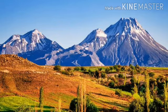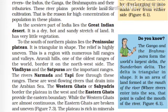In the western part of India lies the Great Indian Desert. The Great Indian Desert is located in the western part of our country. This area is a dry, hot, and sandy stretch of land. It has very little vegetation because of the sand.